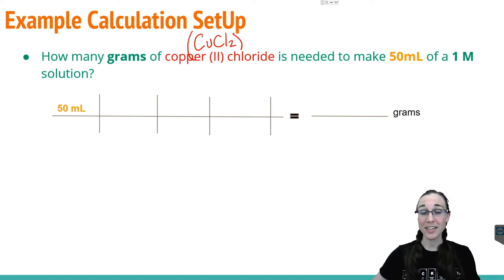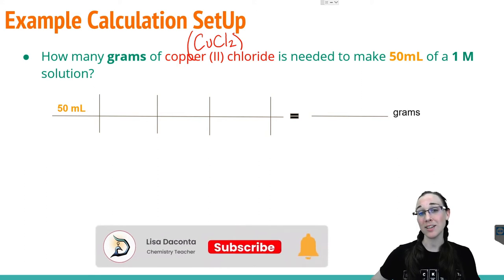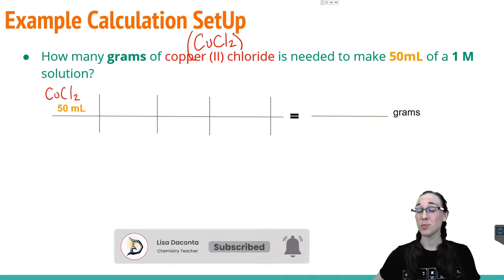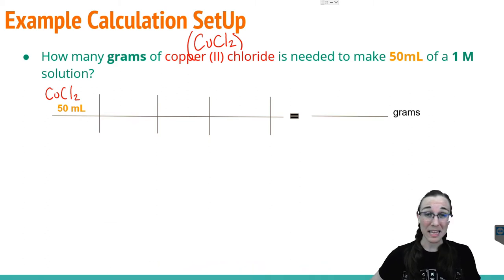Following our typical dimensional analysis setup with a magical line to freedom and a space for our answer, we'll put our given 50 milliliters of CuCl2 as the first thing on our line. To get rid of the milliliters, we first need to get rid of the milli part. And we know that there are 1000 milliliters in one liter. So now we can see that the milli part will certainly cancel and will be left with liters.